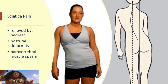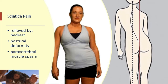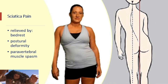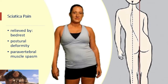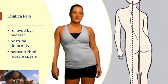Sciatica pain is relieved by bed rest. A patient with sciatica would usually have a postural deformity described as: when standing, there is a slight forward tilt of the trunk, scoliosis of the lumbar spine, and slight flexion of the hip and knee on the affected side. This position is adopted by the patient as the body tries to reduce the pain on that side of the leg, resulting in signs and symptoms congruent with scoliosis.